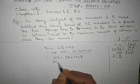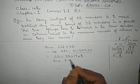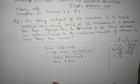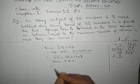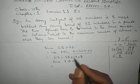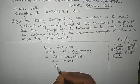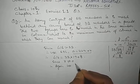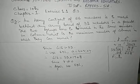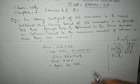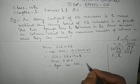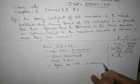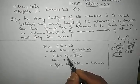Since r is not equal to zero, therefore we again use Euclid's Division Lemma. Now a is equal to b into q plus r, where the new values are taken from the previous step.